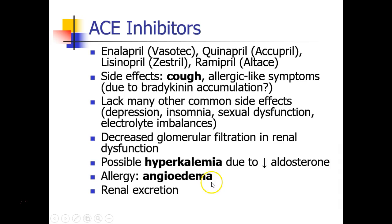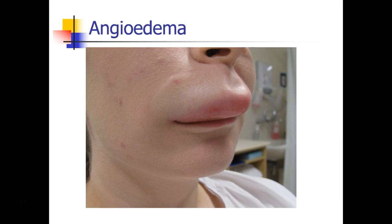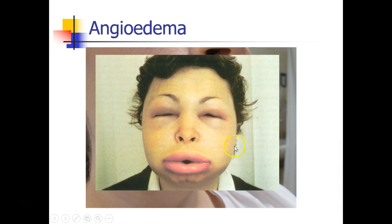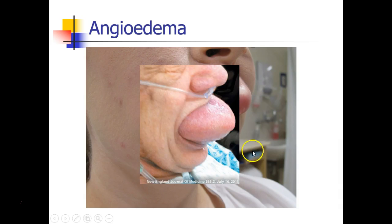Another important thing about ACE inhibitors is that a subset of the population has an allergy to them causing very profound angioedema of the tongue, the lips, and the face. ACE inhibitors are metabolized and then renally excreted. Here are some impressive pictures of angioedema — first of the lips and the face, and even the eyes — and the classic picture of angioedema of the tongue.